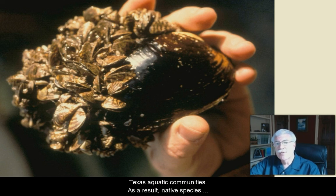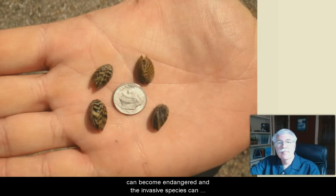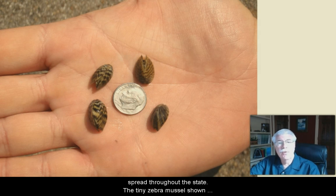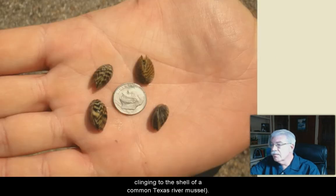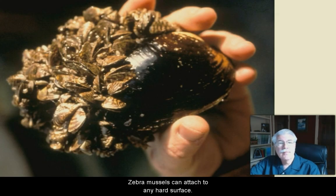The tiny zebra mussel, which is shown here, has grown in massive numbers — in this particular instance it can be seen covering a native species. They're very small. They're now infesting Lake Texoma, for example, in north Texas, and other locations. Many zebra mussels are shown clinging here to the surface of an outboard motor, and here they're shown clinging to the shell of a common Texas river mussel.